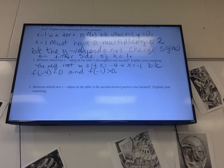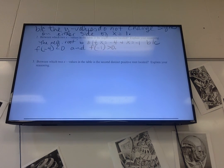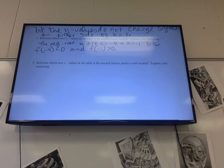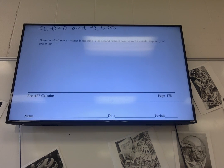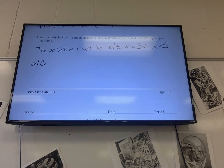So between - right, the positive root is between x equals three and x equals five because f of five is positive and f of three is negative.